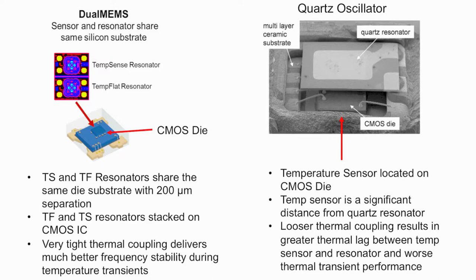The temperature sensor resides on the CMOS die for the quartz oscillators and is mounted onto the package substrate, then connected to the package leads and crystal connections via bond wires. This physical separation between the temperature sensor and resonator causes significant thermal lag and therefore more frequency stability error during fast thermal transients. There is little that can be done to improve the thermal lag because the temperature sensor cannot be placed on the quartz resonator. This is a fundamental limitation of quartz oscillators.